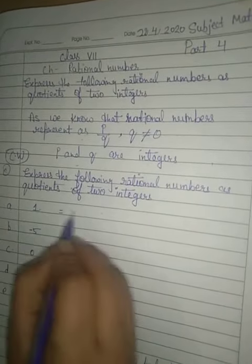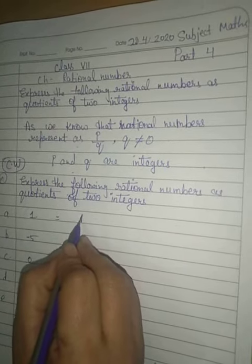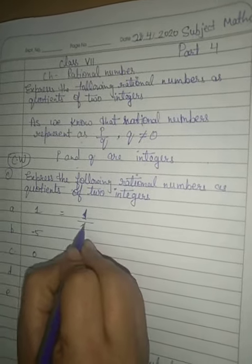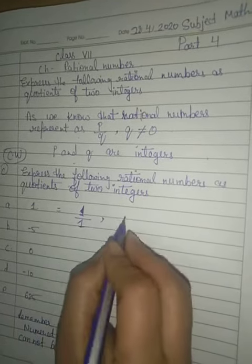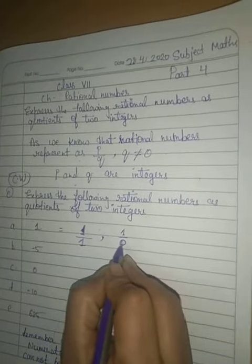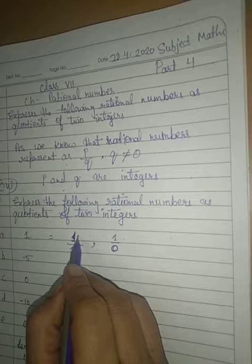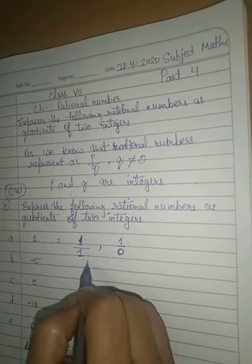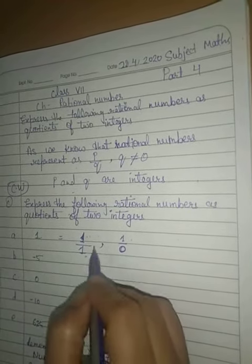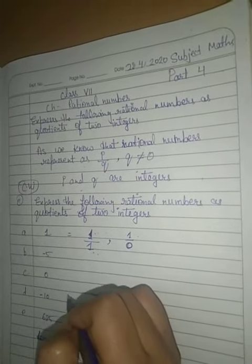Suppose we will take 1. 1 is equal to 1 upon 1. Now, 1 upon 0, it is also 0. So we can say it is in the form of p upon q. It means this is a rational number. Okay.